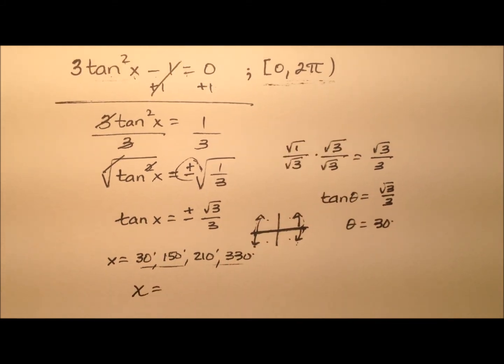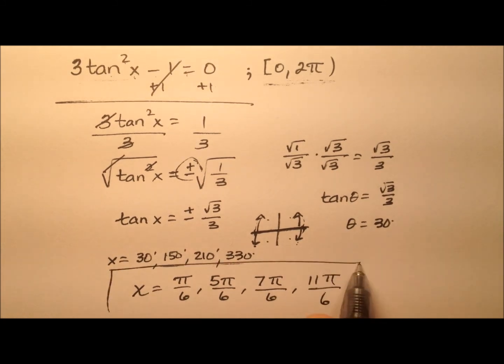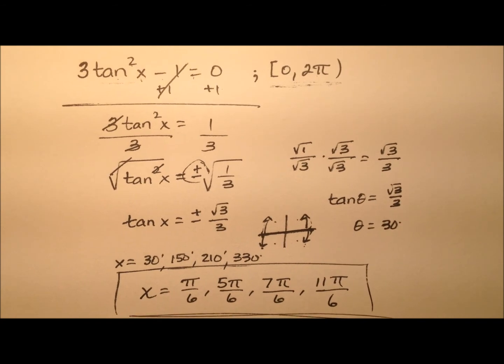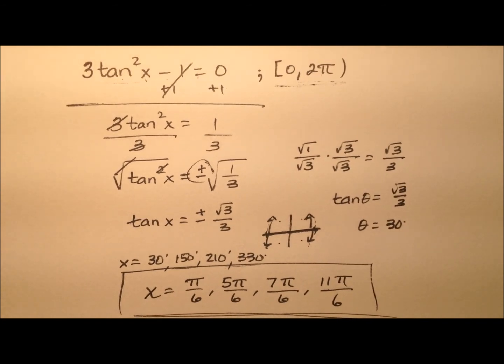So let's just go ahead and adjust those quickly. So 30 degrees will be pi over 6. 150 degrees will be 5 pi over 6. 210 is 7 pi over 6. And finally, 330 is 11 pi over 6. So we're actually going to have four solutions for this trigonometric equation.